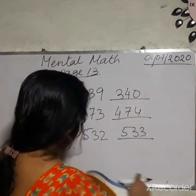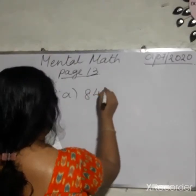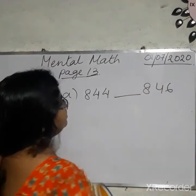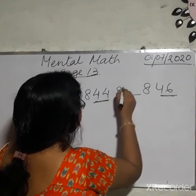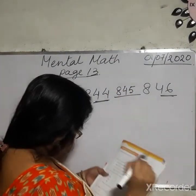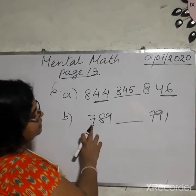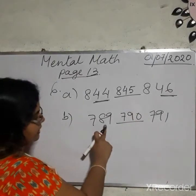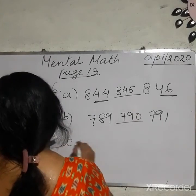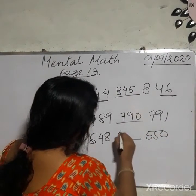The last one, number 6: what comes in between? In between, number 1: what comes in between 844 and 846? That is 845. Number B: 789 and 791 — what comes in between? That is 790. 89, 90, 91. Number C: here will be 549.